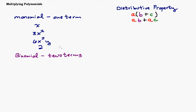For example, x minus 3x squared is a binomial, or 6xy minus 4, or 3x minus 4y — where the two terms are not like terms and so it can't be simplified.